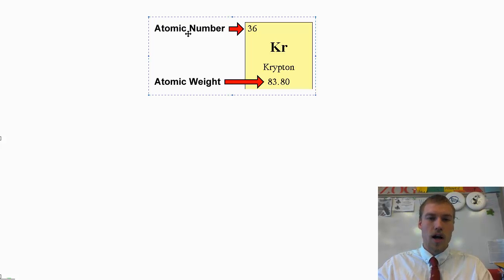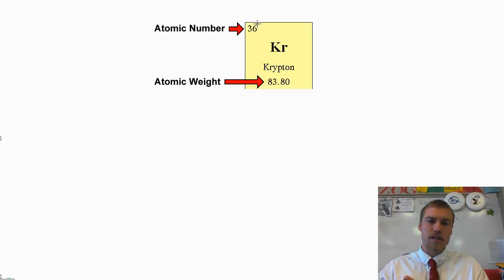So if we look here, we've got our periodic table. Up in the top corner, we're going to have the atomic number, and that's going to be in different places on different periodic tables. In the middle, we've got the symbol and the name. In this case, we're looking at krypton. And then at the bottom, we've got the atomic weight.